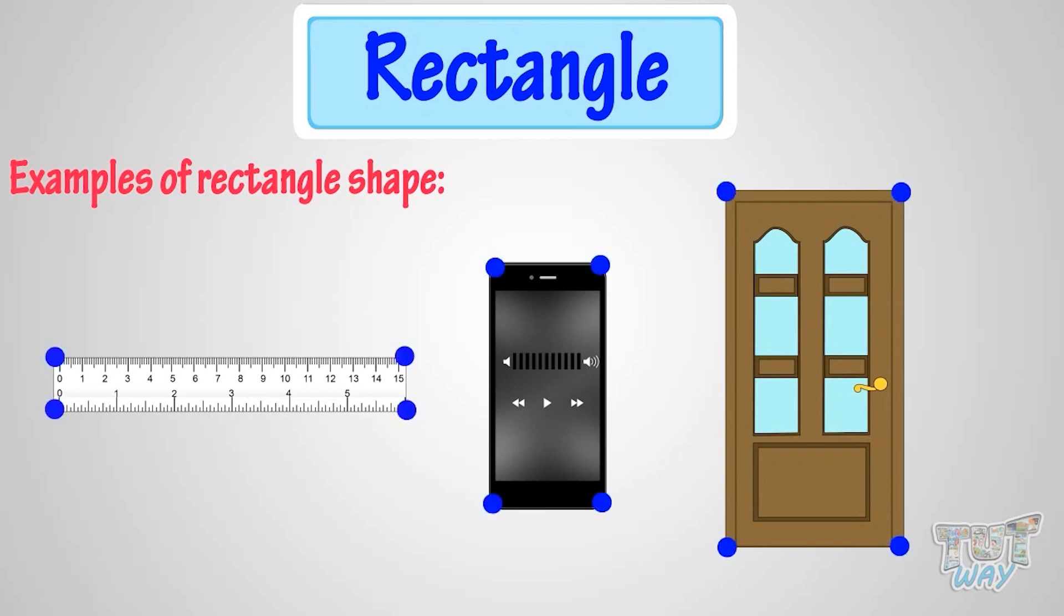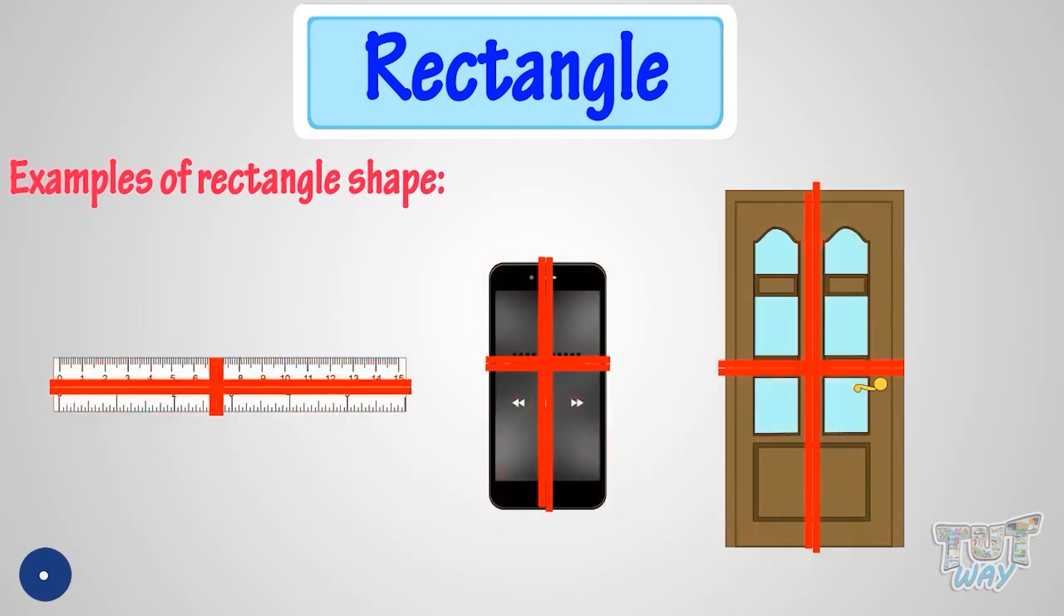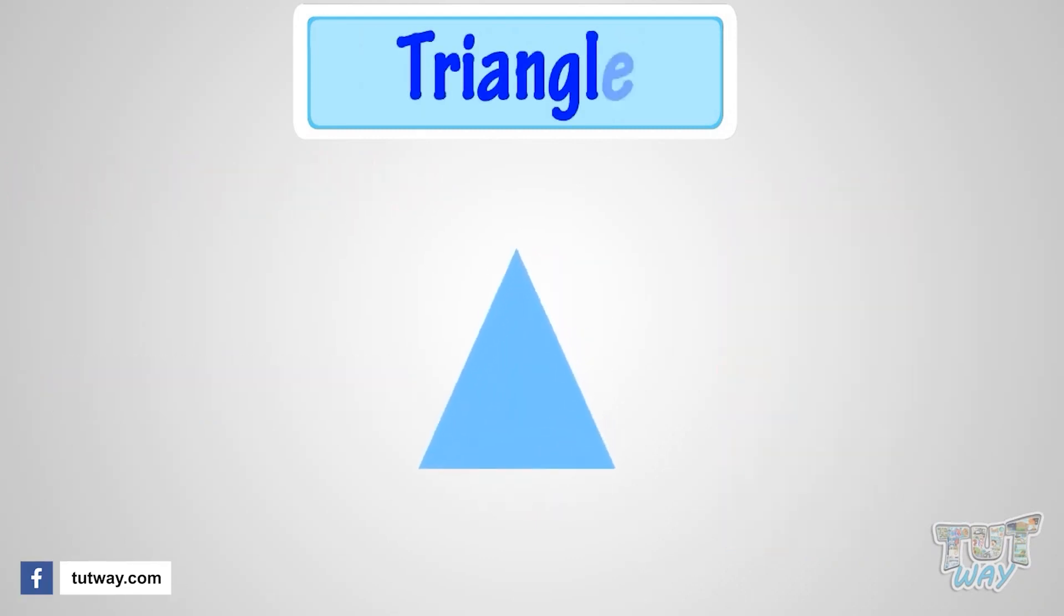Yeah, all these things are rectangle in shape as they have four sides, four vertices, and opposite sides are equal. Good!